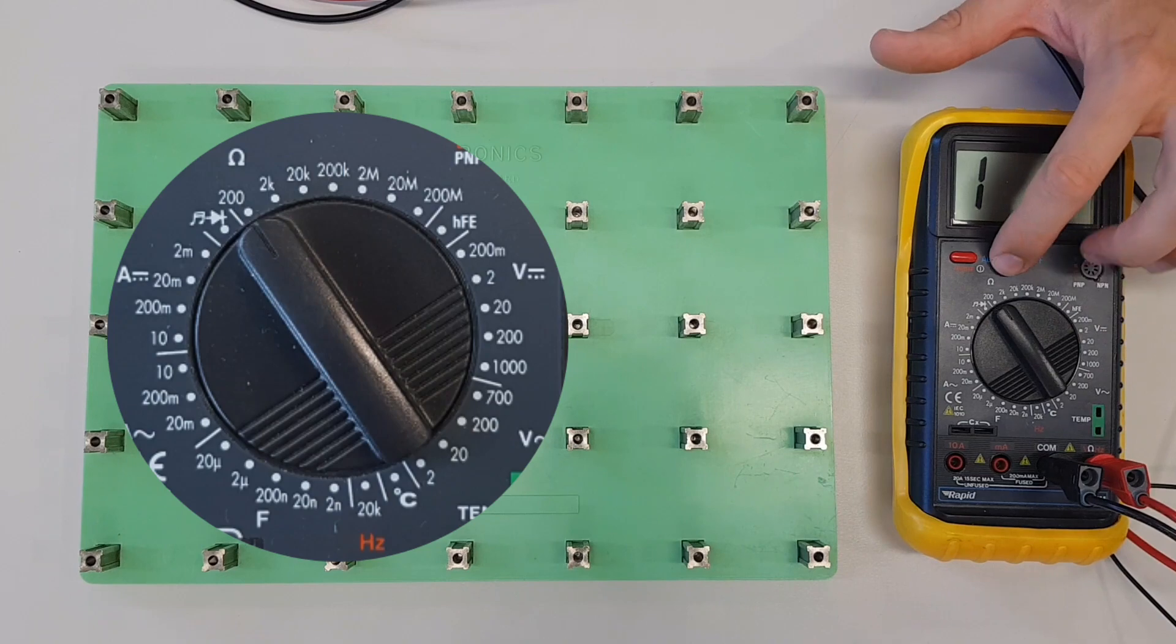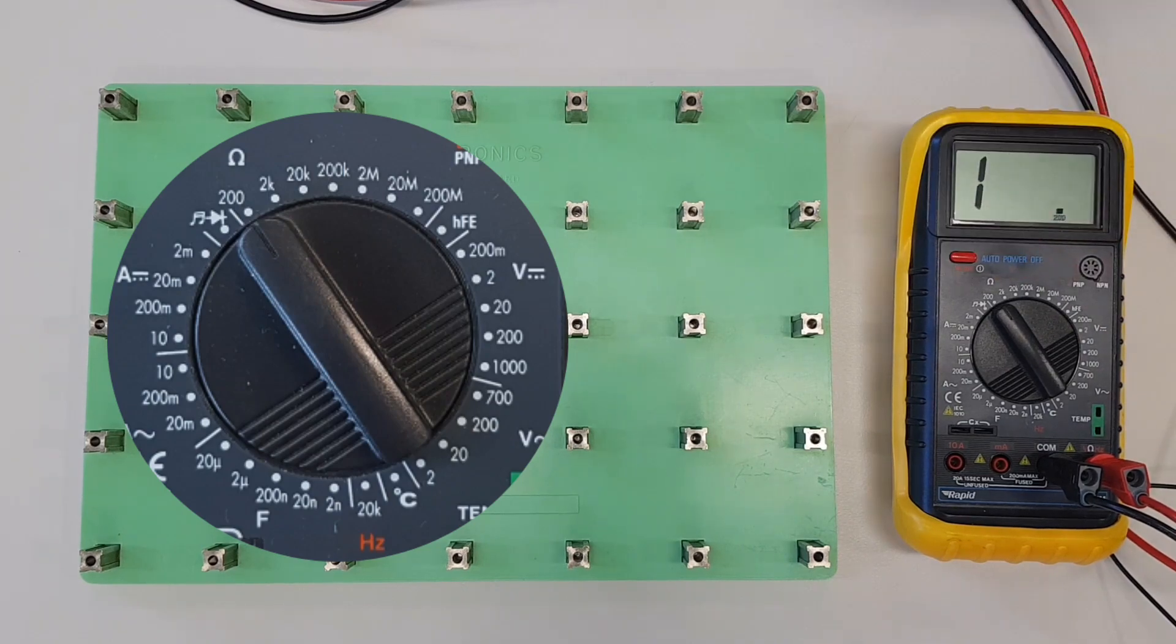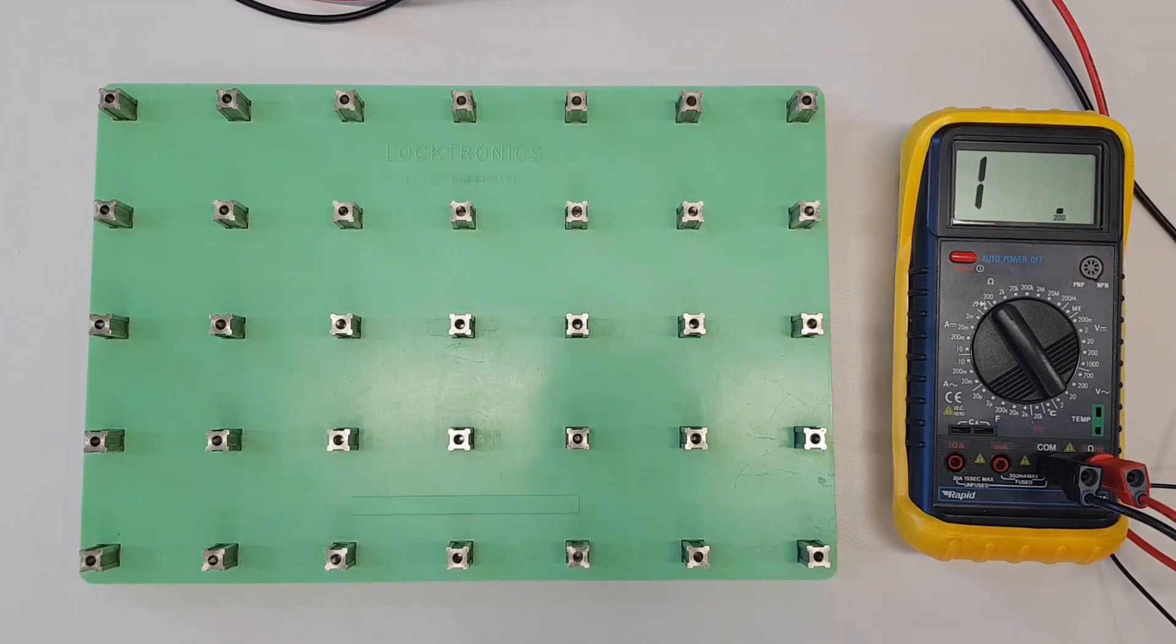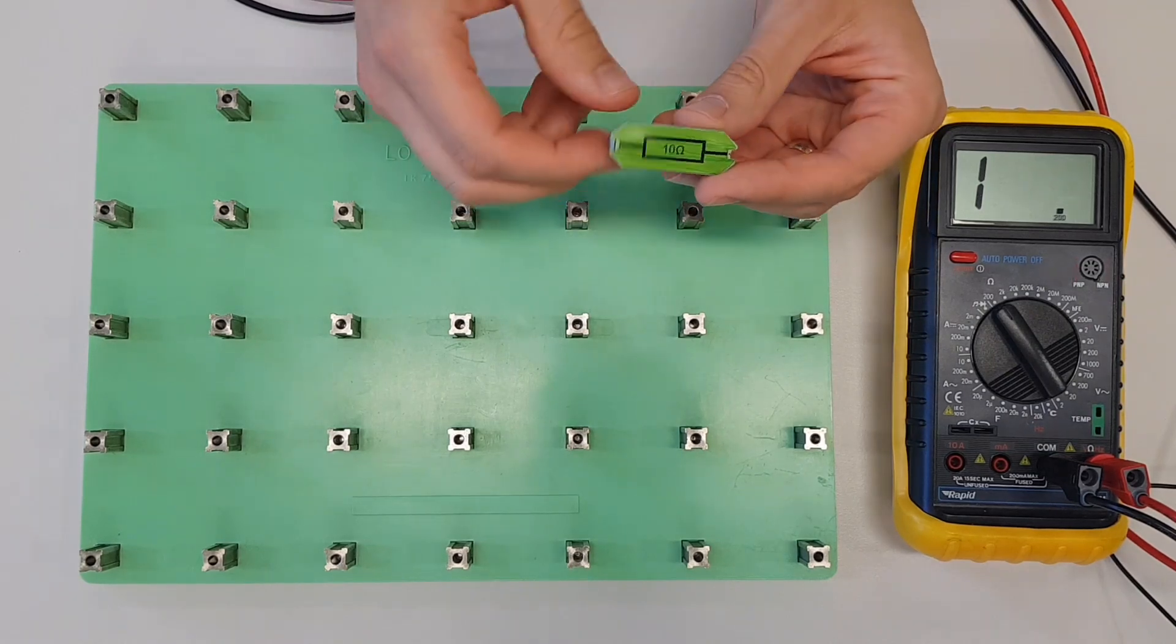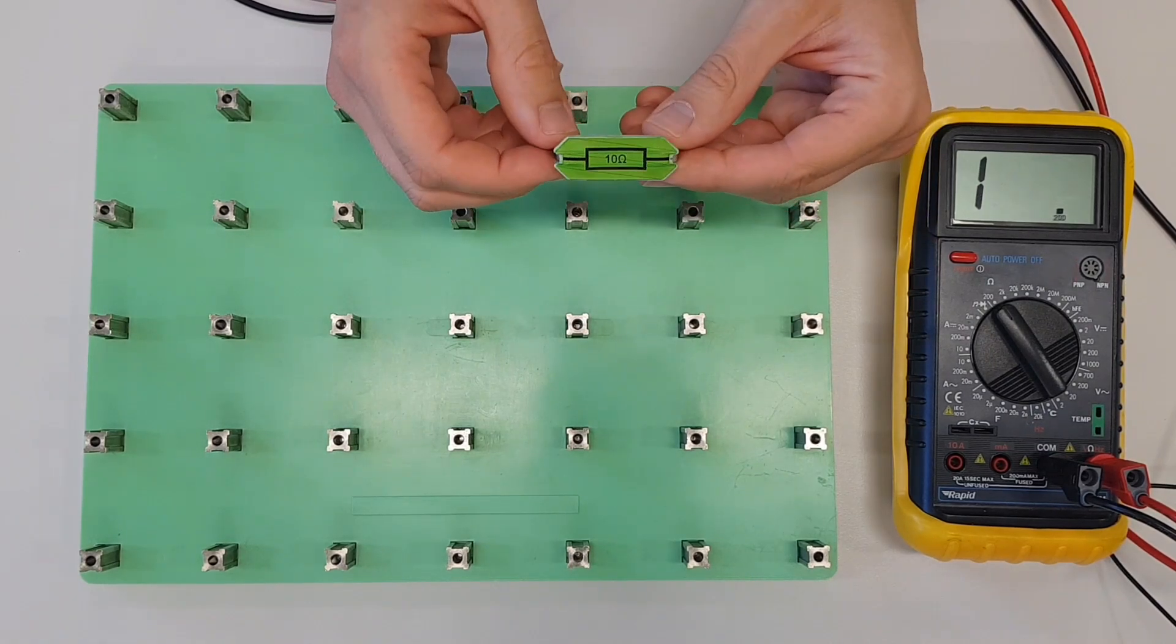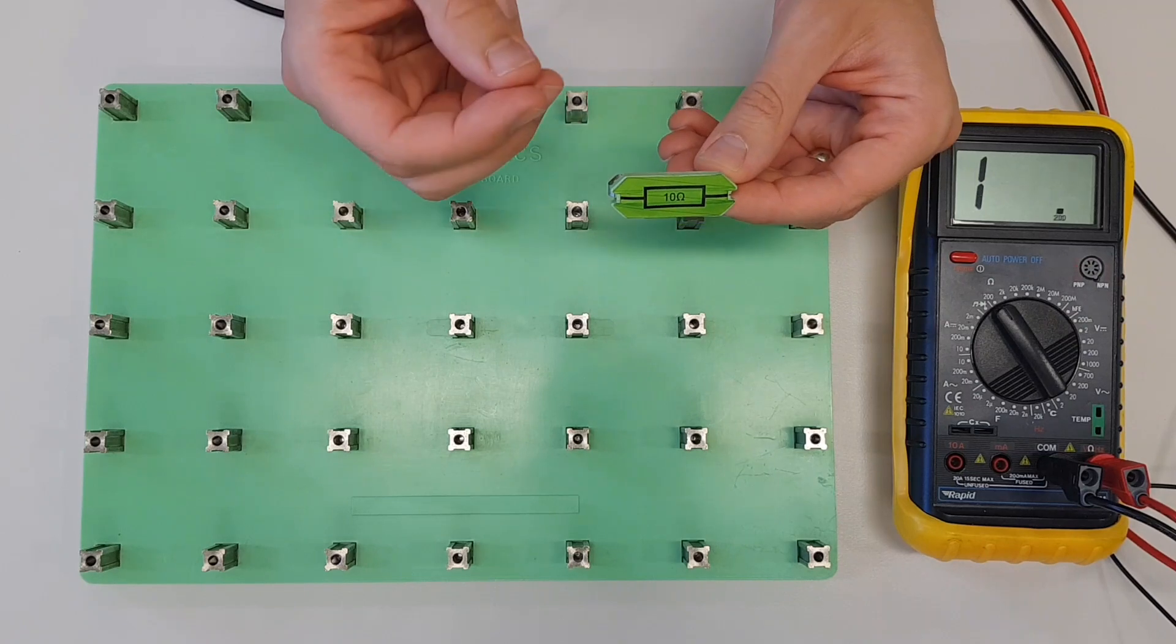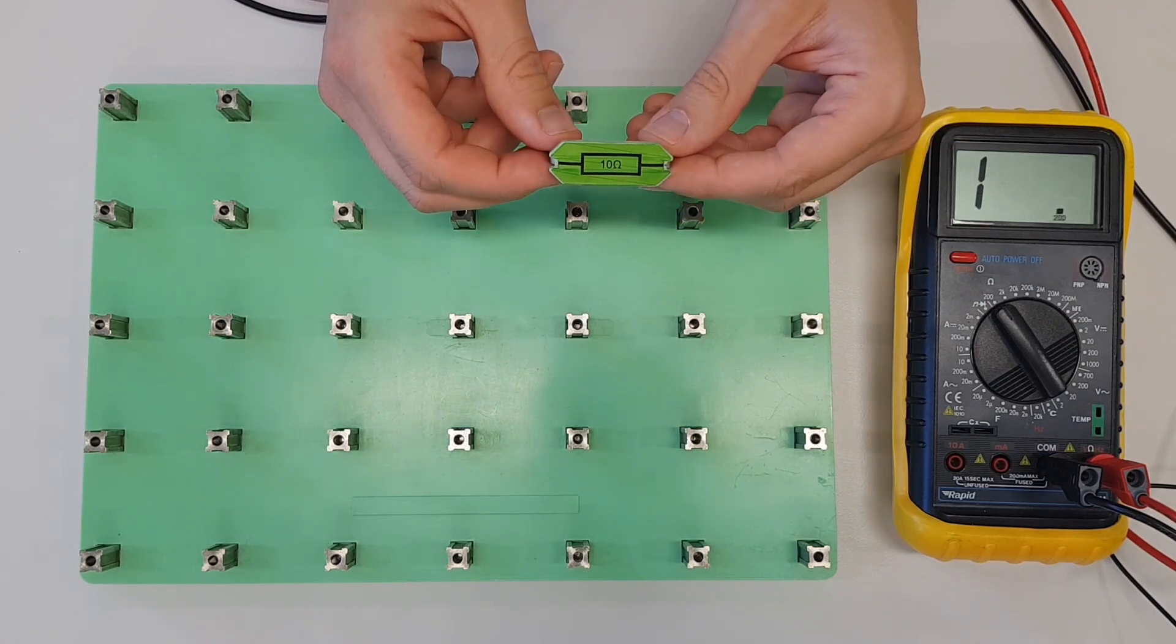It is set up to measure ohms, so remember resistance is measured in ohms. We're going to connect up some different values of resistors in series this time. In a previous video we had resistors that all had the same value; in this video we're going to look at resistors of different values.